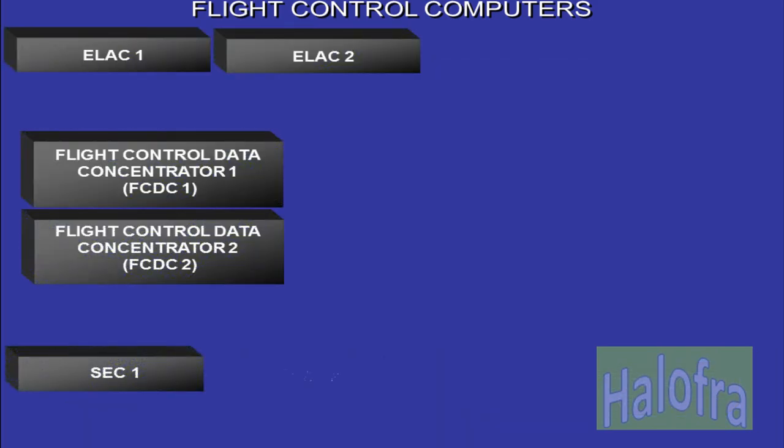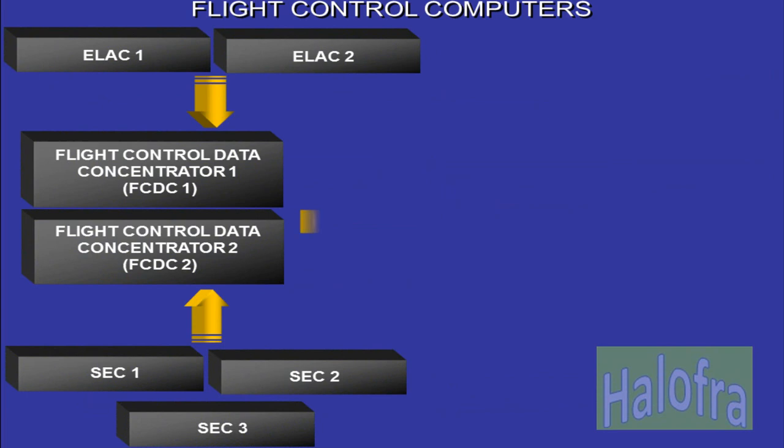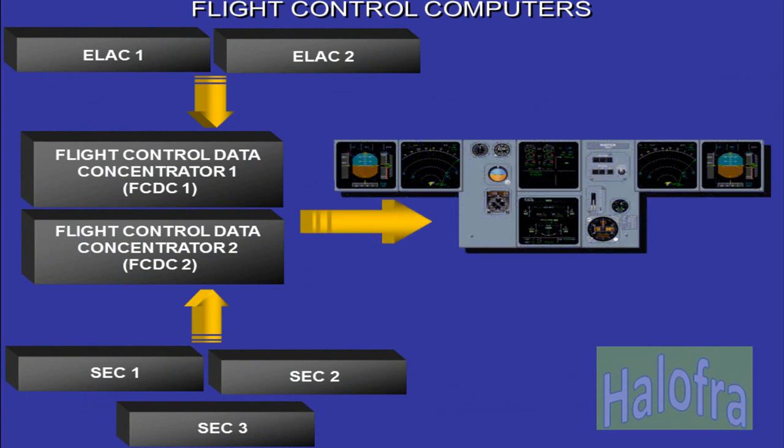Two flight control data concentrators, FCDCs, are installed. They receive data from ELAC and SEC computers for indication, recording, and maintenance purposes. The FCDC stores the maintenance data and delivers failure indications — such as stored failures, failure history, troubleshooting guidance — as well as failed LRUs to the Centralized Fault Display Interface Unit, CFDIU.